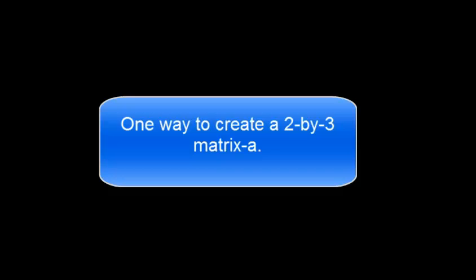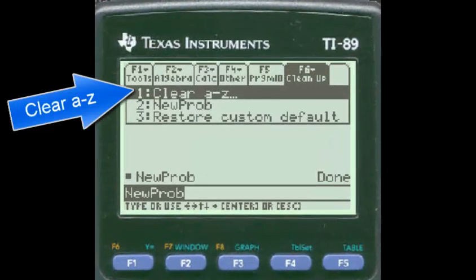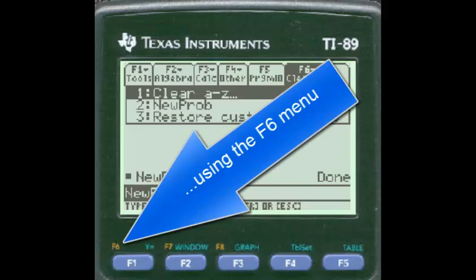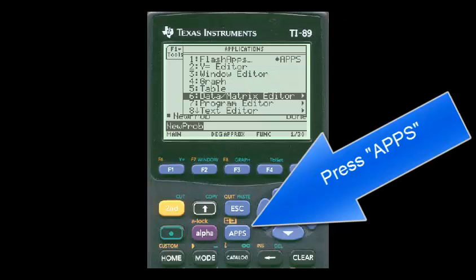One way to create a 2 by 3 matrix A. Clear the single variables. Define a new problem using the F6 menu. Press the apps key.